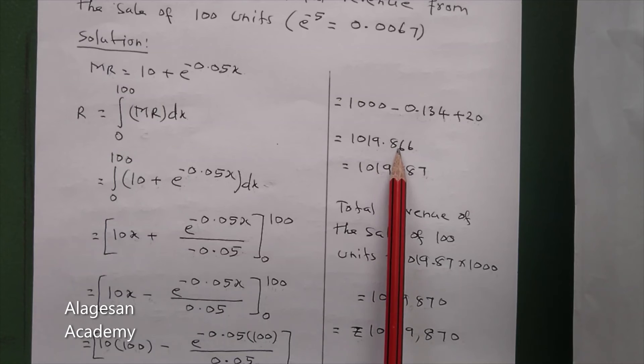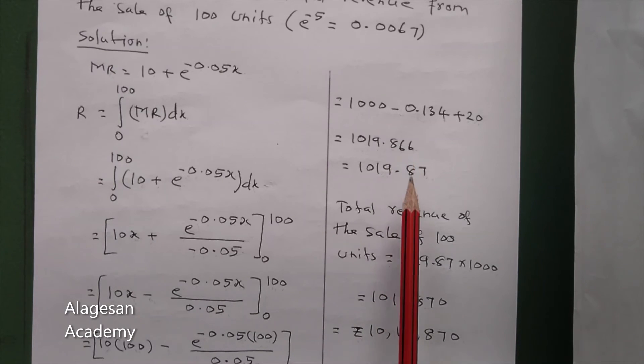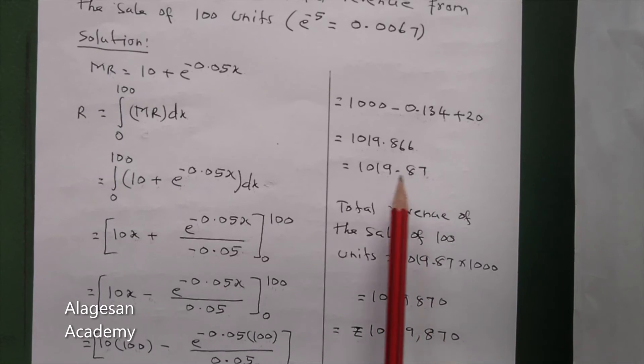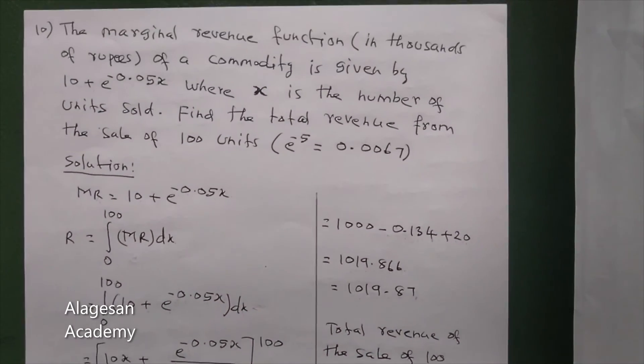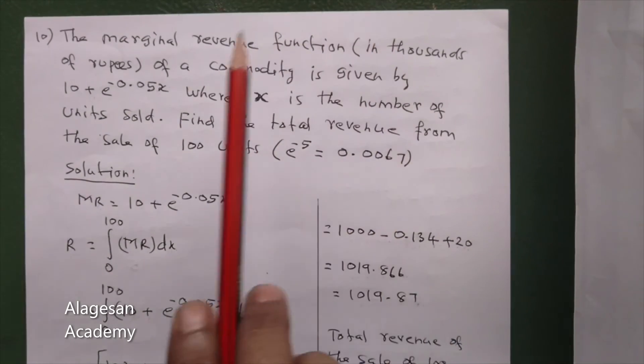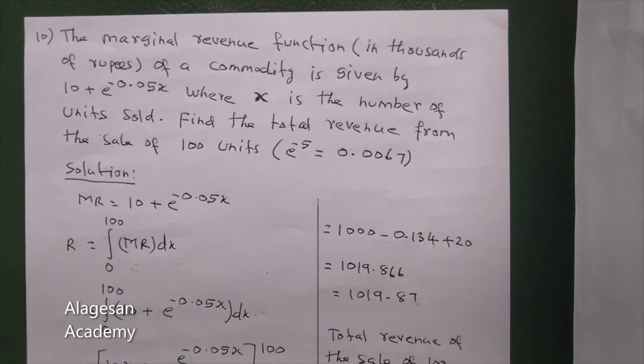This gives 1019.866. Round to two digits: 1019.87. But the question states this is in thousands of rupees. The function is in thousands of rupees.